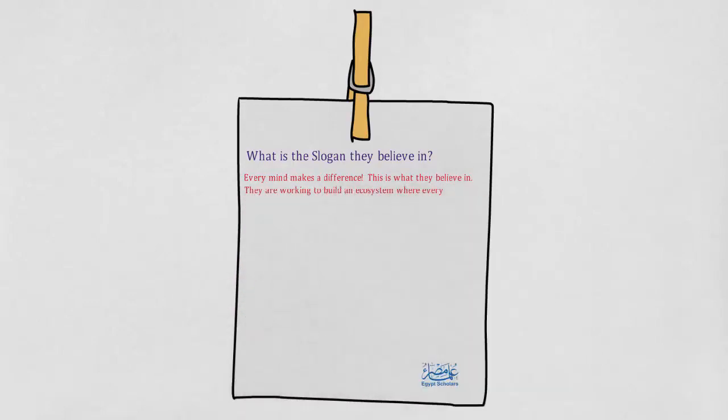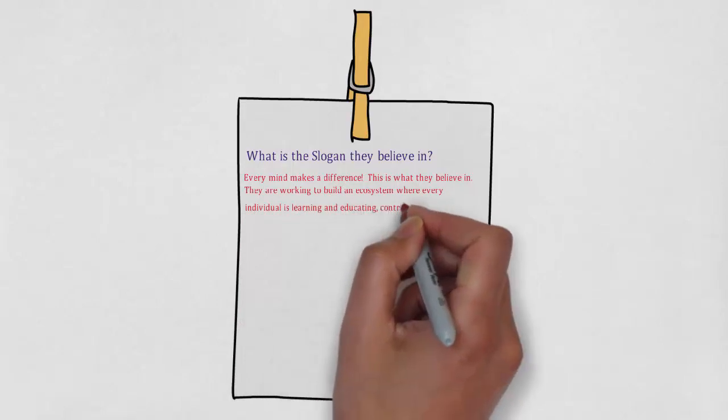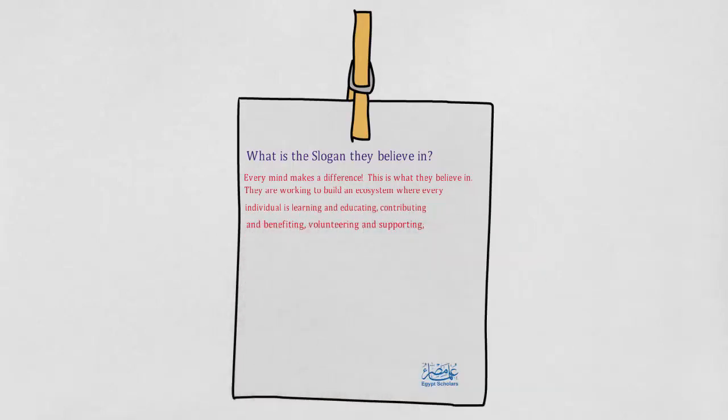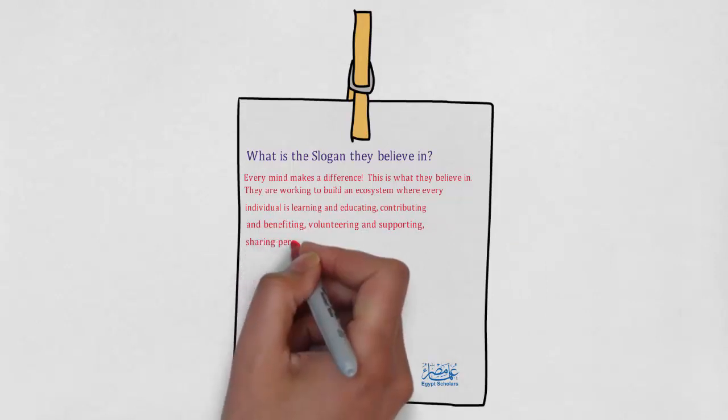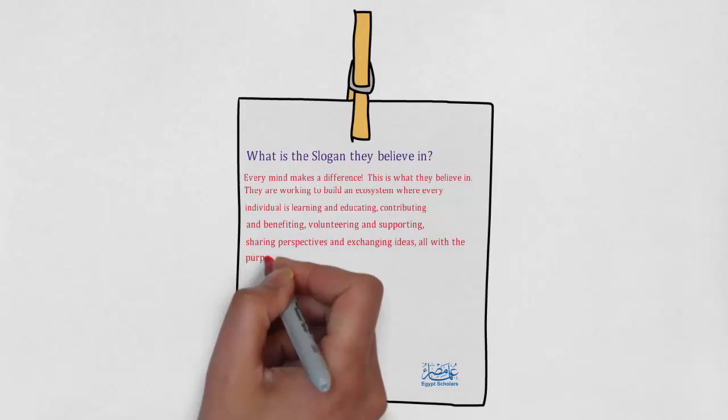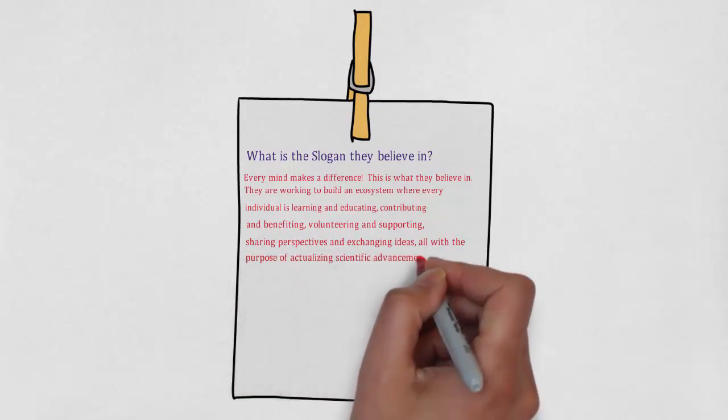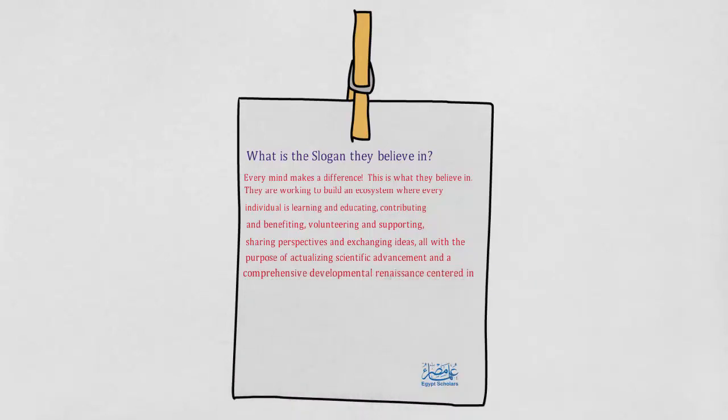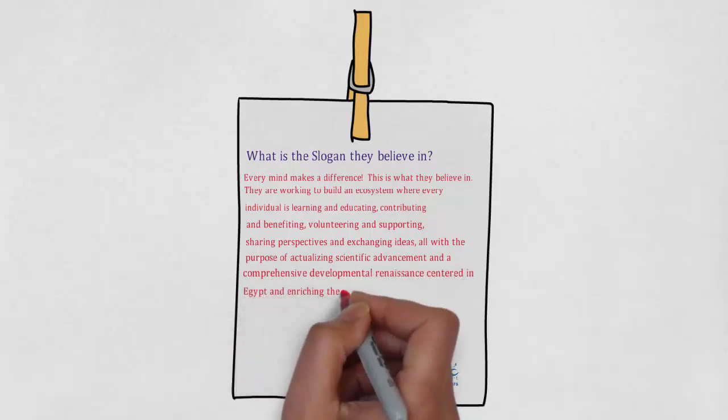This is what they believe in. They are working to build an ecosystem where every individual is learning and educating, contributing and benefiting, volunteering and supporting, sharing perspectives and exchanging ideas. All with the purpose of actualizing scientific advancement and a comprehensive developmental renaissance centered in Egypt and enriching the world.